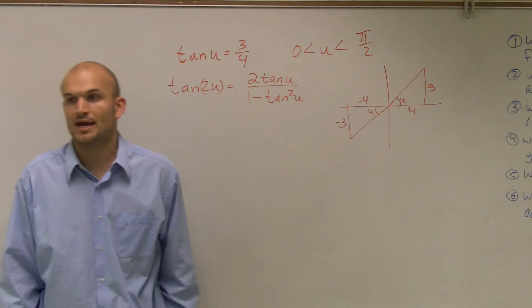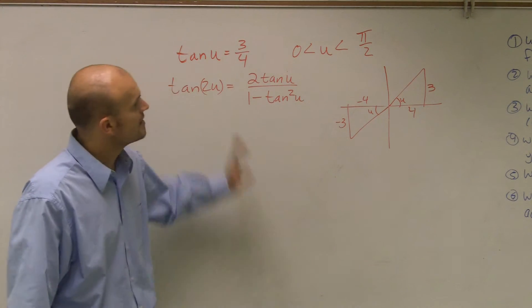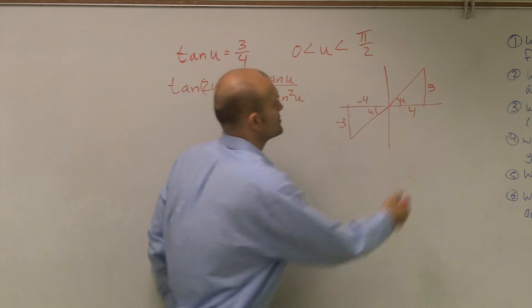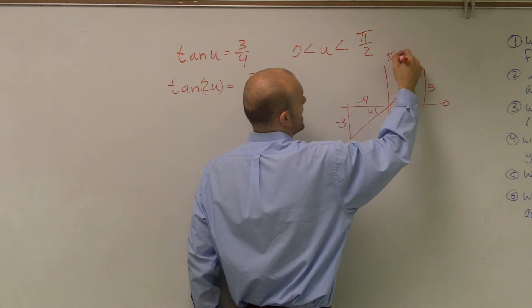Because negative 3 over negative 4 also produces a positive 3 fourths. Thankfully though, the constraints are between 0 and pi over 2.